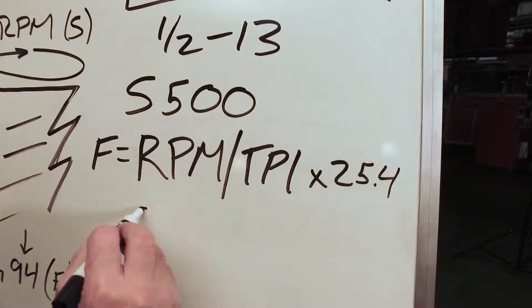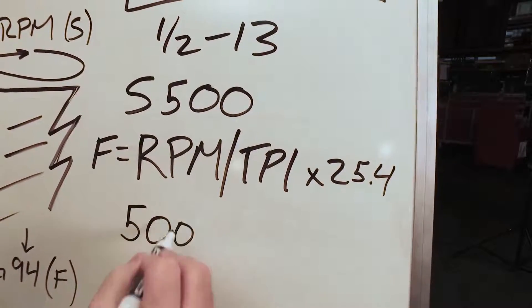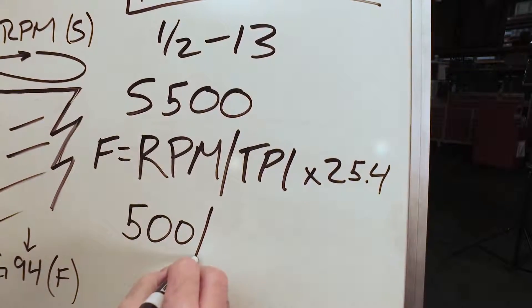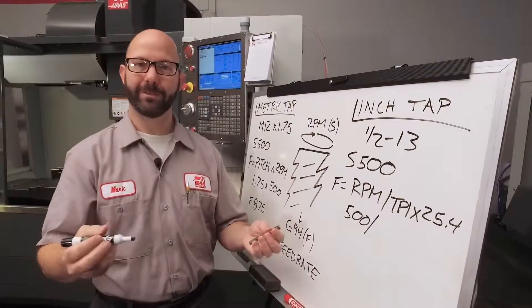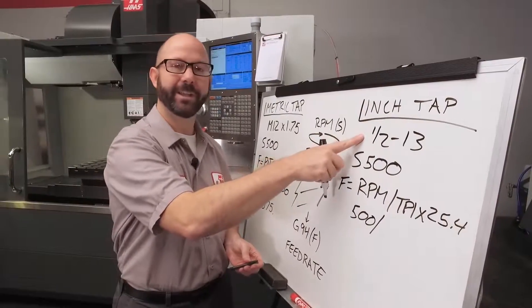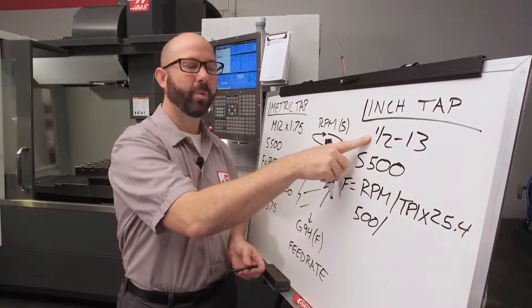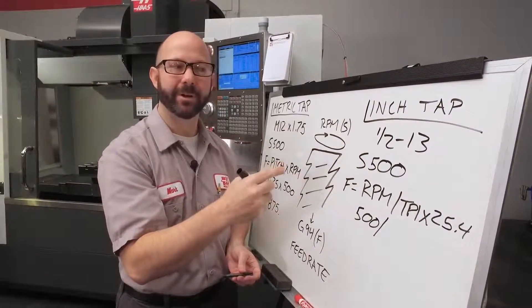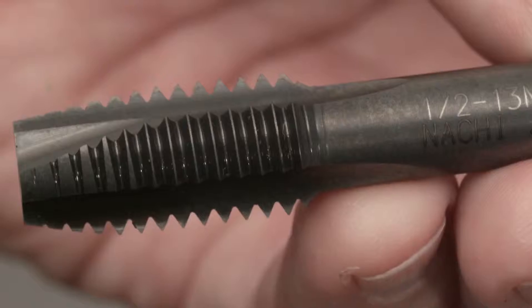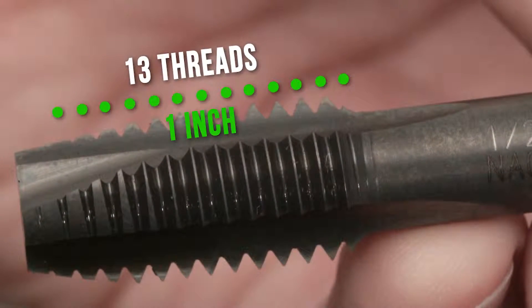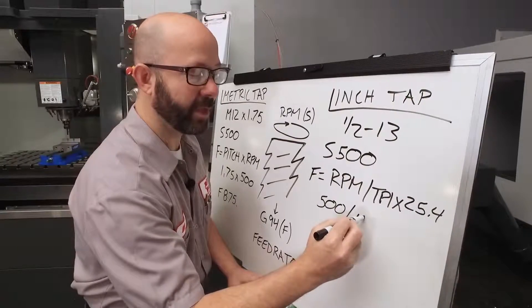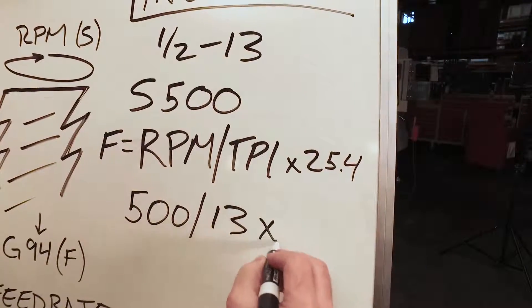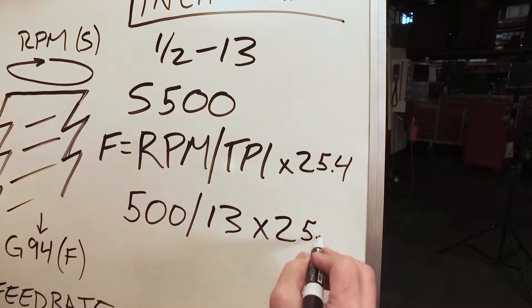Let's fill in our formula. 500 RPM divided by, but what is our TPI? Well, I'm lucky again because it's written in the name of my tap. One half inch is the basic diameter, and 13 is the number of threads per inch, TPI. So we're going to enter 500 RPM divided by 13 threads per inch times 25.4.